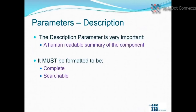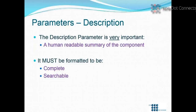Let's get deeper into the description parameter. It is a human-readable summary of the component — I just had to read that because it's so key. That is the definition. It has to be human readable, and in particular it needs to be complete and searchable. The large company I worked for had 106 columns of information. I could have pieced together a component by looking through all 106 columns, but because they had a decent description column, I only had to look at that one column — I didn't have to look through the other 105.